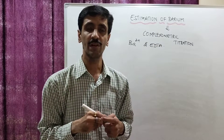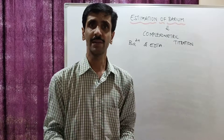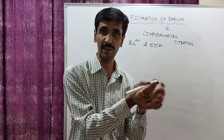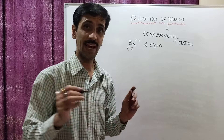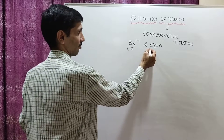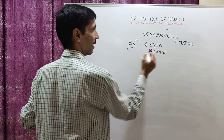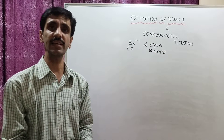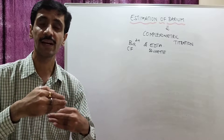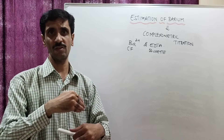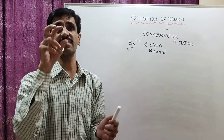Since we are using the word titration, you know very well that we have a solution in the conical flask — that of course is going to be the barium ions — and a solution in the burette, which is going to be EDTA. Apart from this, we also need an indicator.